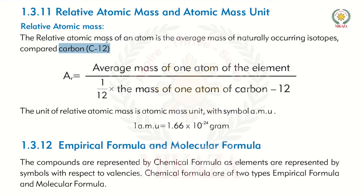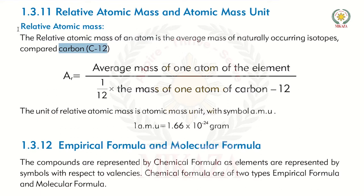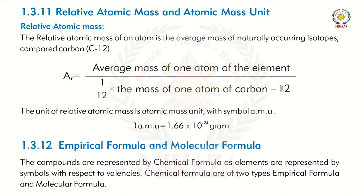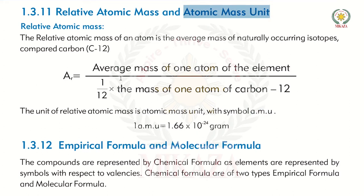One carbon isotope has a mass of 12 grams, one is 13 grams, and one is 14 grams. When we compare an atom's mass with carbon C12, that comparison is known as Relative Atomic Mass. The unit used is AMU — Atomic Mass Unit. So Relative Atomic Mass is the comparison of an atom's mass with C12 carbon, and its unit is AMU.